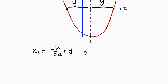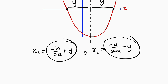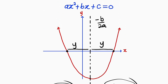And if you want to obtain the other root x2, you subtract y from the line of symmetry — negative b divided by 2a, minus y. And one thing to remember: whenever you multiply your two roots together, you will always obtain the ratio of the constant to the leading coefficient, which is c divided by a.